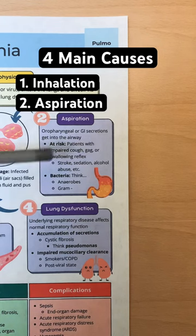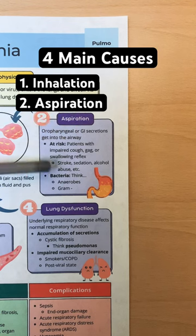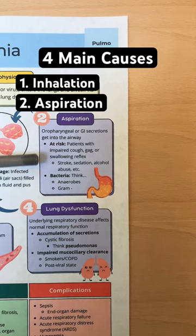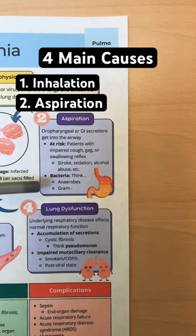The second cause is aspiration. This is when GI secretions get in the airway. Patients with impaired cough or swallowing reflex are at risk, such as stroke. Think anaerobes and gram negatives.